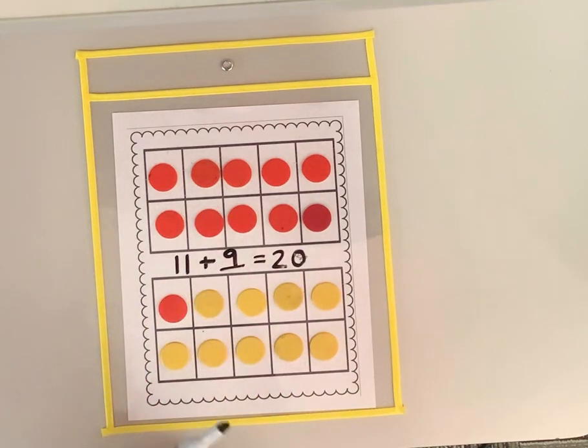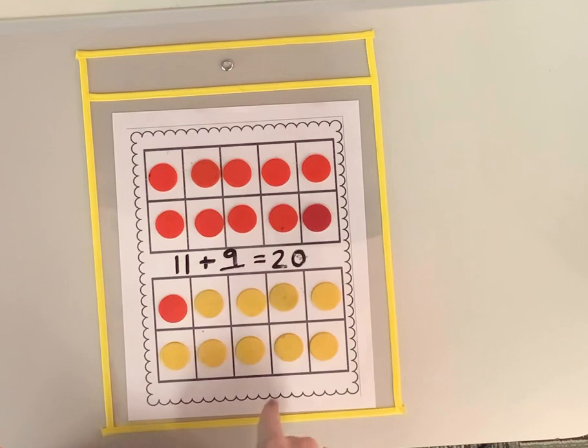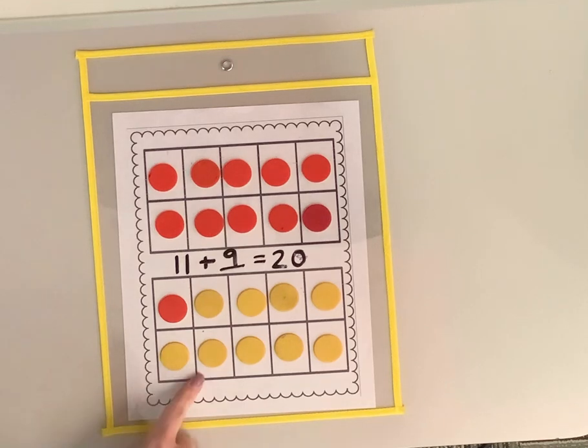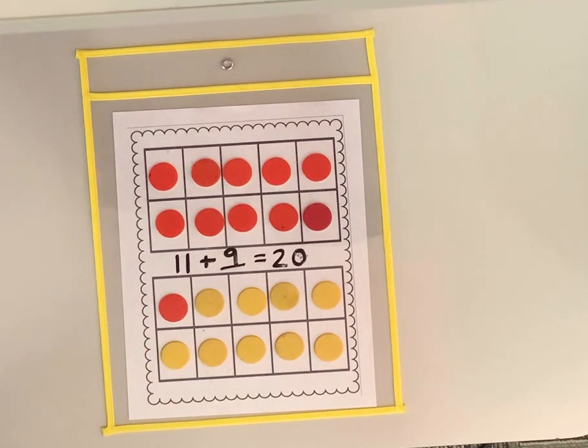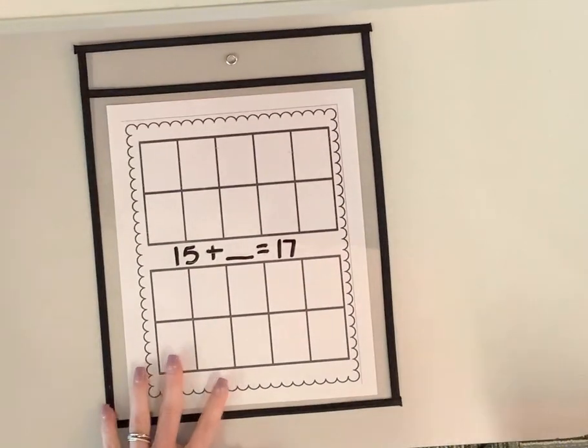I started with 11 pencils and I got, I added more and now I have 20. I used red and yellow counters to help me figure out how many pencils I added to my stack. Let's do one more problem together before you guys try it on your own.